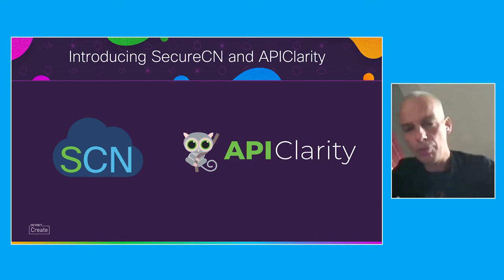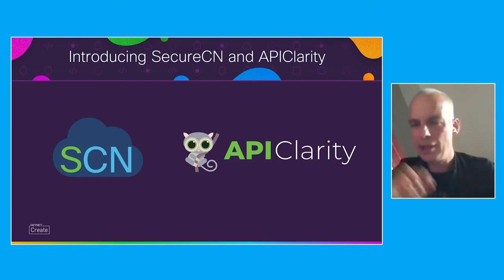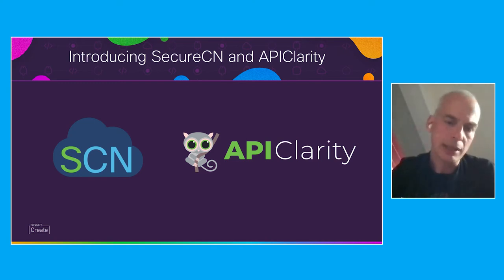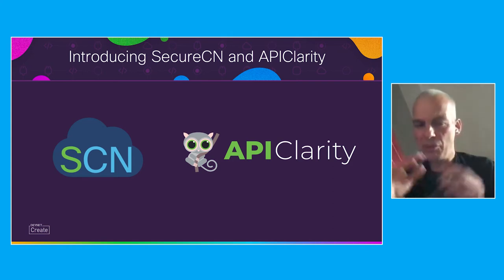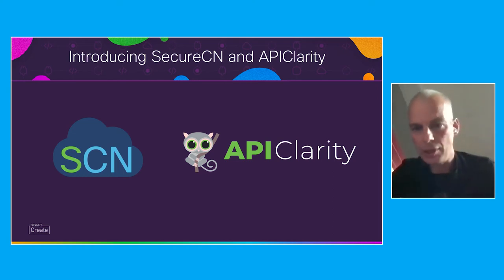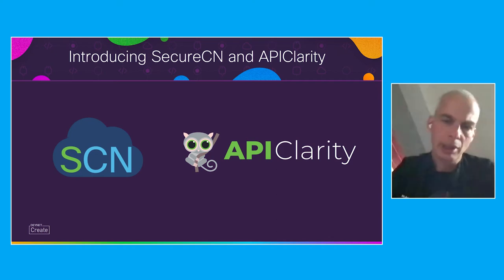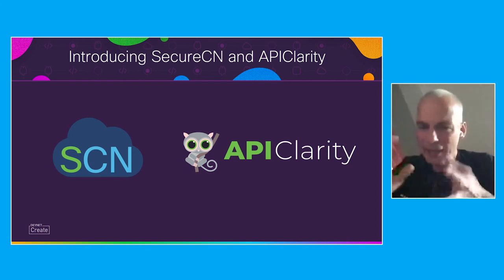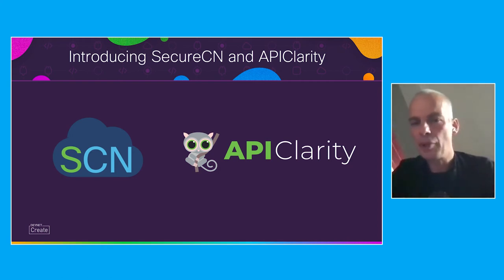We also deliver an open source package called API Clarity. It's a slimmed-down version of SecureCN and gives you insight into the applications as they're running. On the left-hand side, SecureCN gives you all the bells and whistles to understand what the application is doing and control the security aspects. On the right-hand side, API Clarity gives you insight into the application infrastructure and, kind of like a Wireshark mode, tells you what kinds of APIs are being used inside your application.